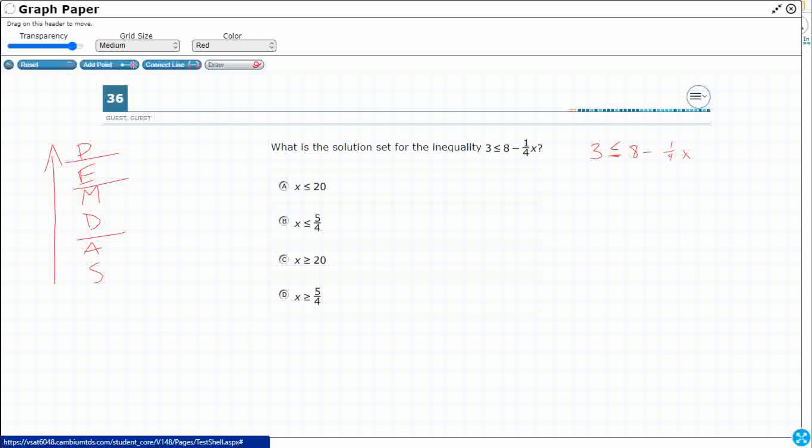Even though it's minus 1/4 x, this is actually strongest right here. We're going to deal with that last because that is a multiplication - it's 1/4 times x. So this is actually what we're going to start with right here: this 8.